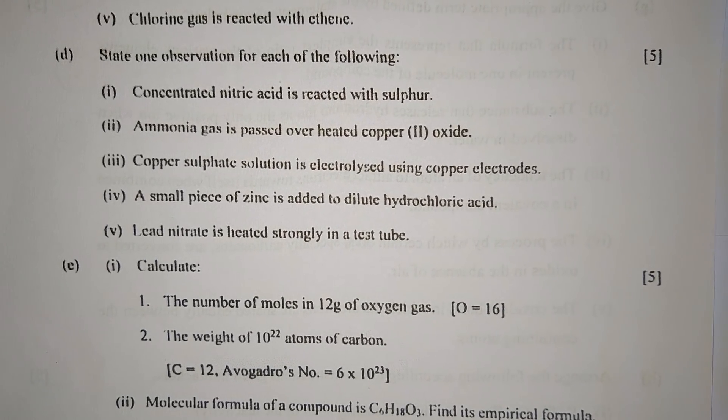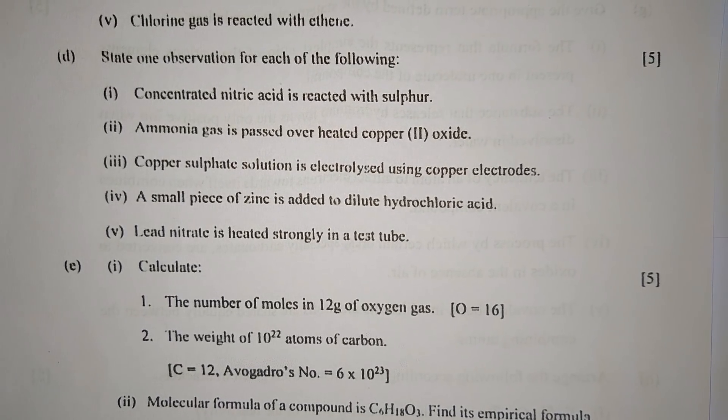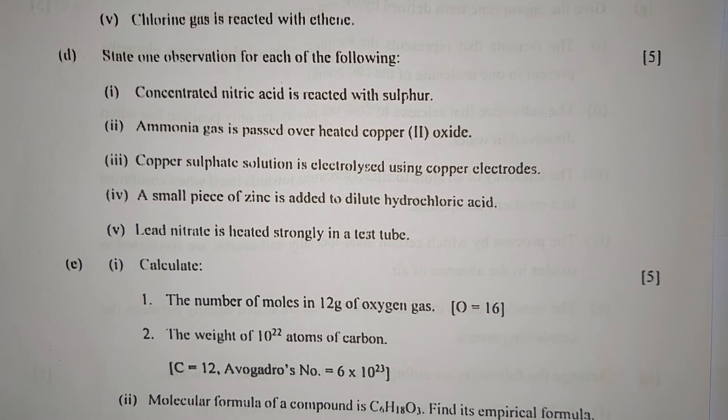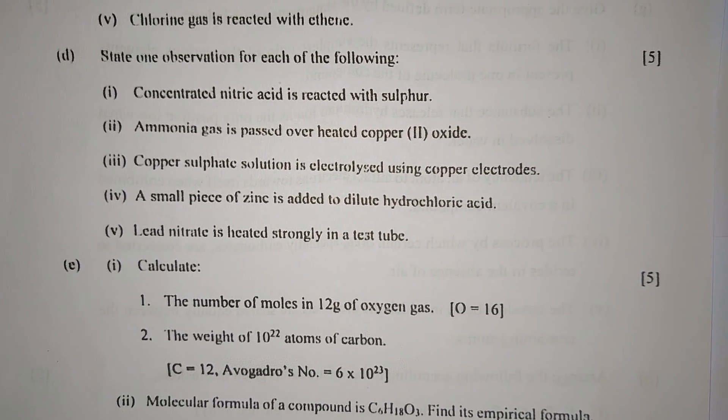Number three: Copper sulfate solution is electrolyzed using copper electrodes. When electrolysis occurs, copper ions from the copper sulfate solution migrate to the cathode. The cathode becomes thicker by the deposition of copper.